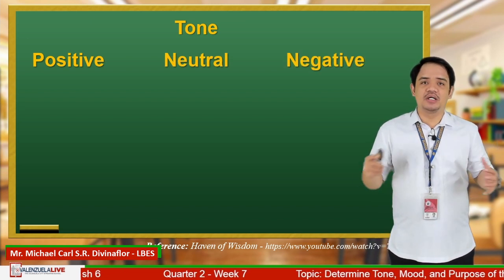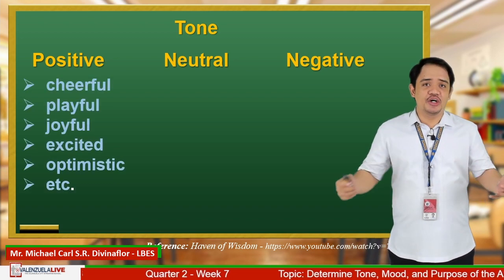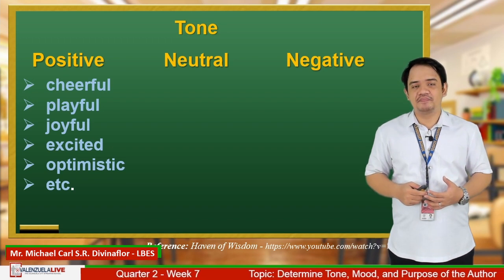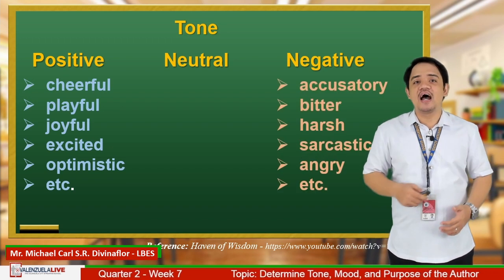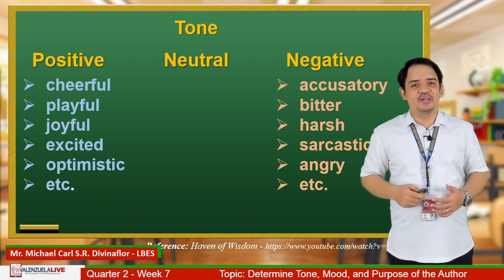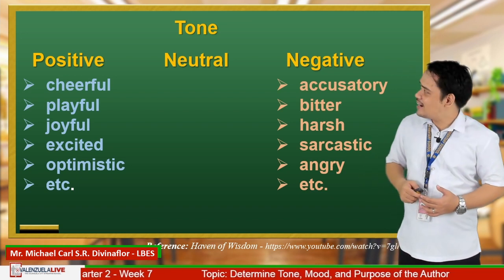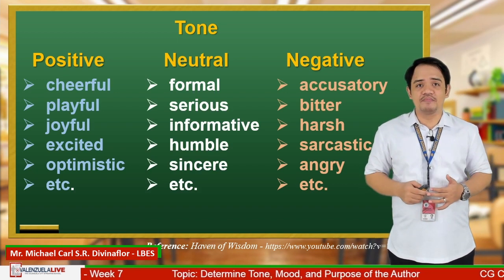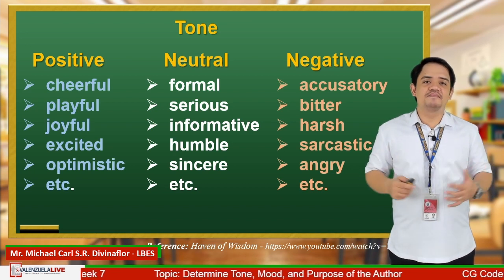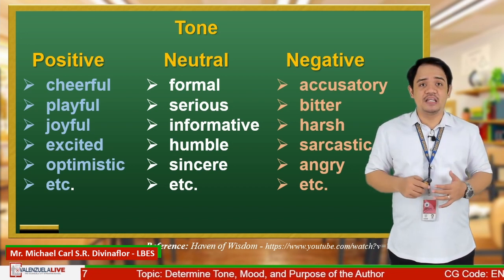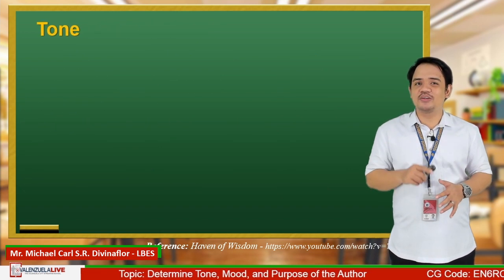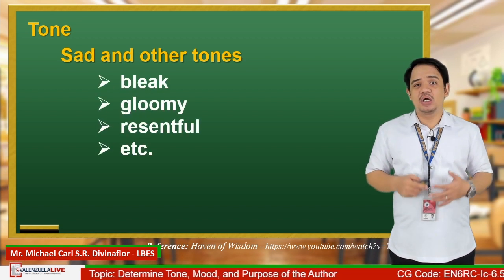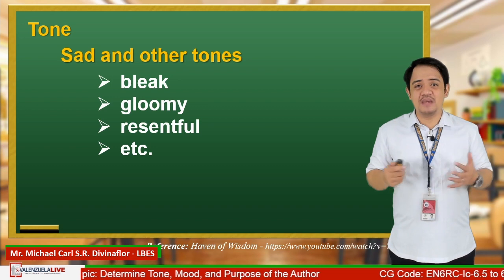Positive tones include cheerful, playful, joyful, excited, optimistic, and many more. Negative tones include accusatory, bitter, harsh, sarcastic, angry, and many more. Neutral tones include formal, serious, informative, humble, sincere, and many more. Other tones fall under sad tone — some of them are bleak, gloomy, resentful, and many more.